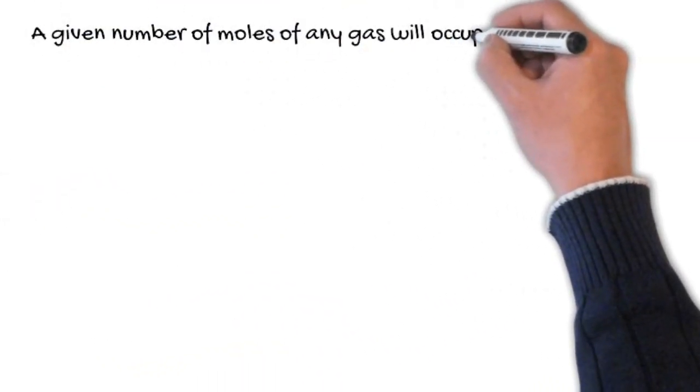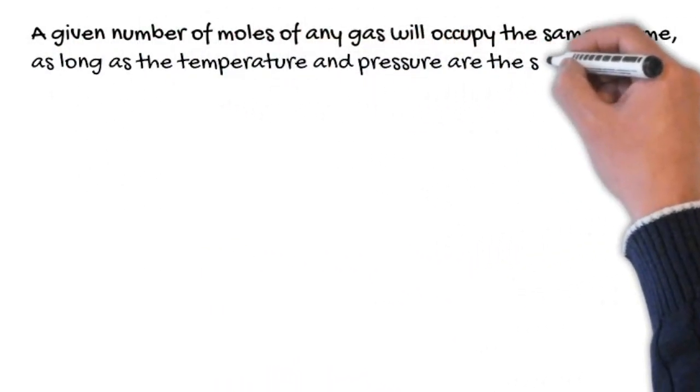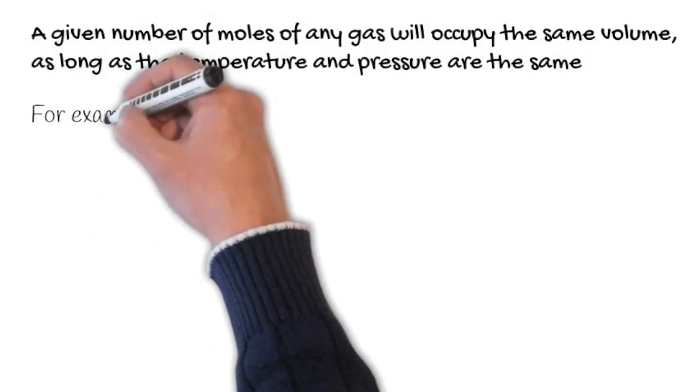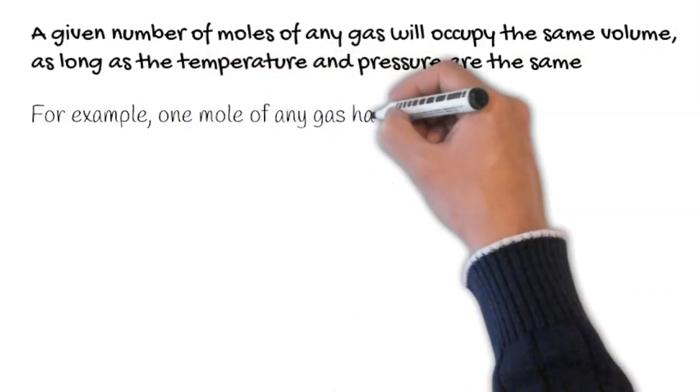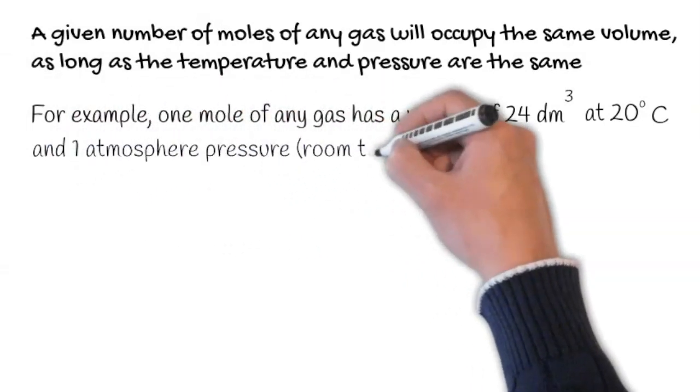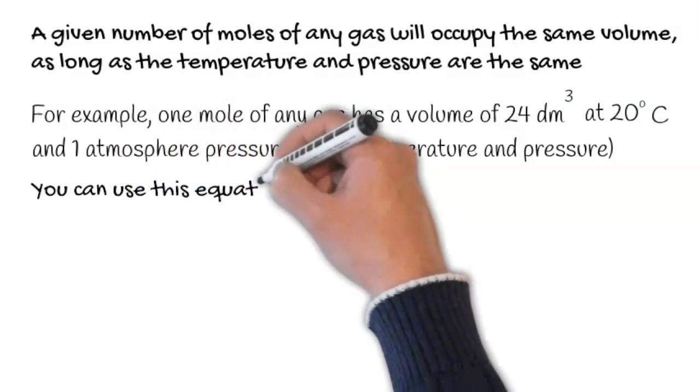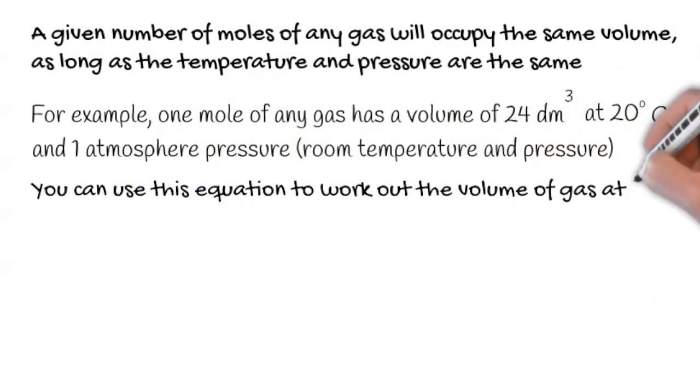A given number of moles of any gas will occupy the same volume as long as the temperature and pressure are the same. For example, one mole of any gas has a volume of 24 decimeters cubed at 20 degrees Celsius and one atmospheric pressure, i.e., room temperature and pressure.